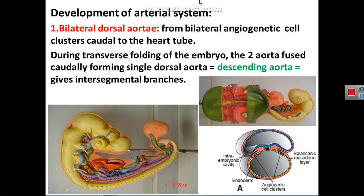Starting with the embryology of the heart, the first artery to be described is the dorsal aorta. As introduced in the heart presentation, we have an angiogenetic cell cluster that develops in the visceral layer of the lateral plate of mesoderm. These clusters will form blood cells and blood vessels. Because they develop anteriorly then posteriorly, in earlier stages they form a U-shaped heart tube, which then forms the heart tube and then the heart loop.